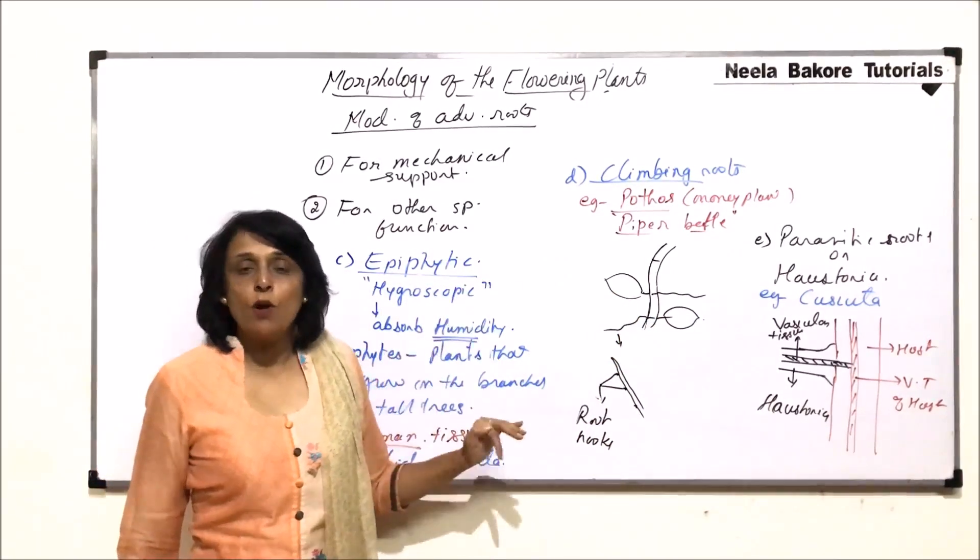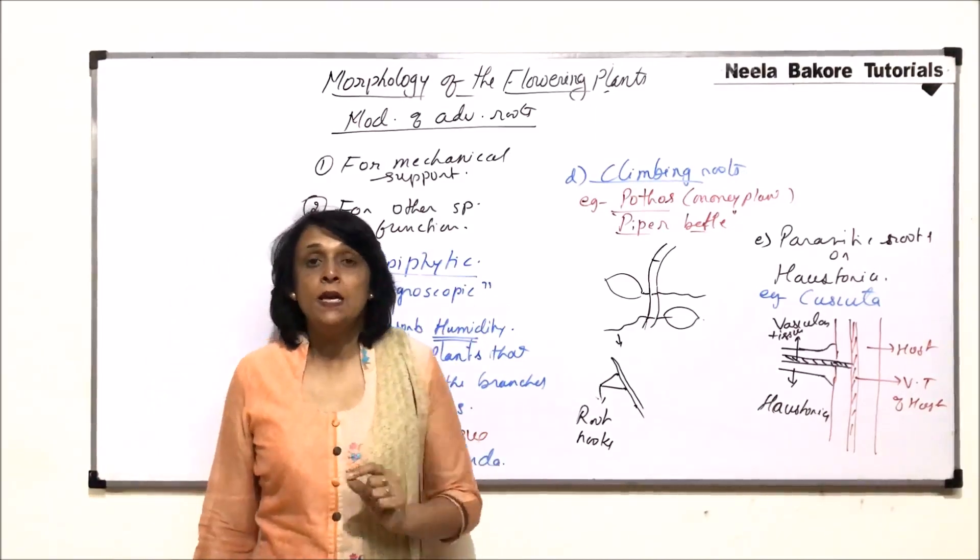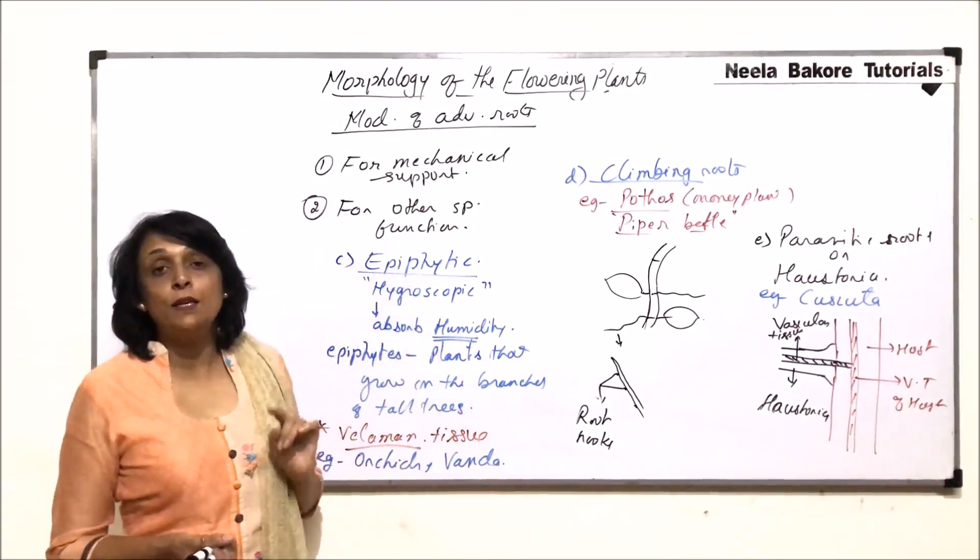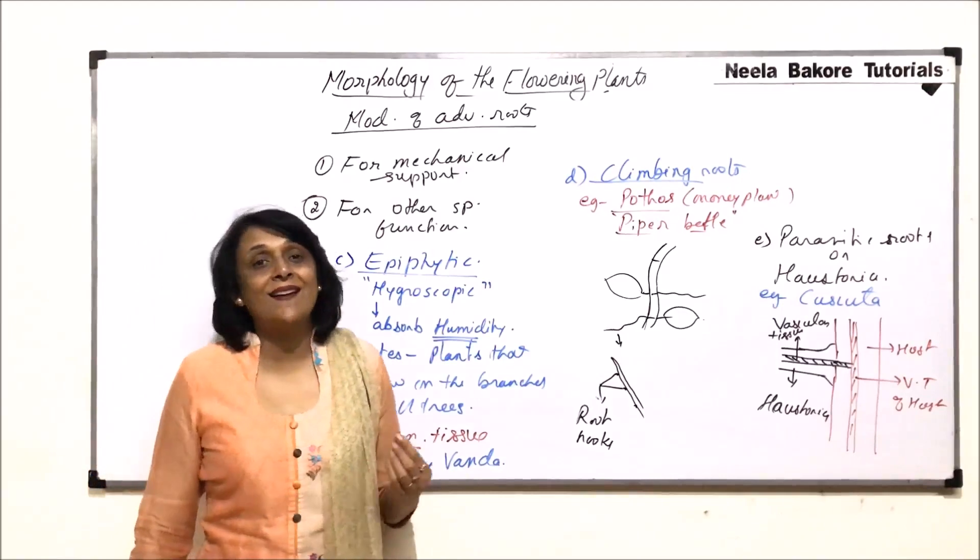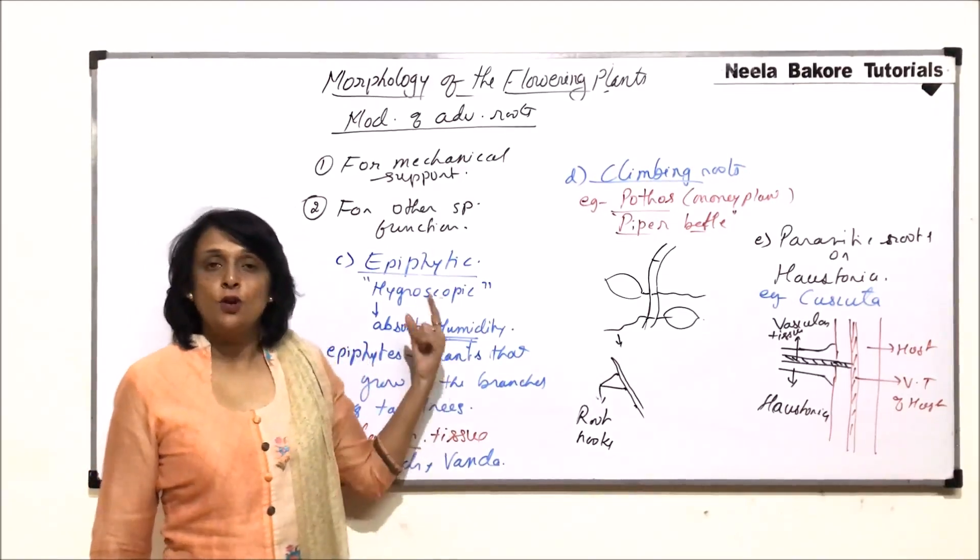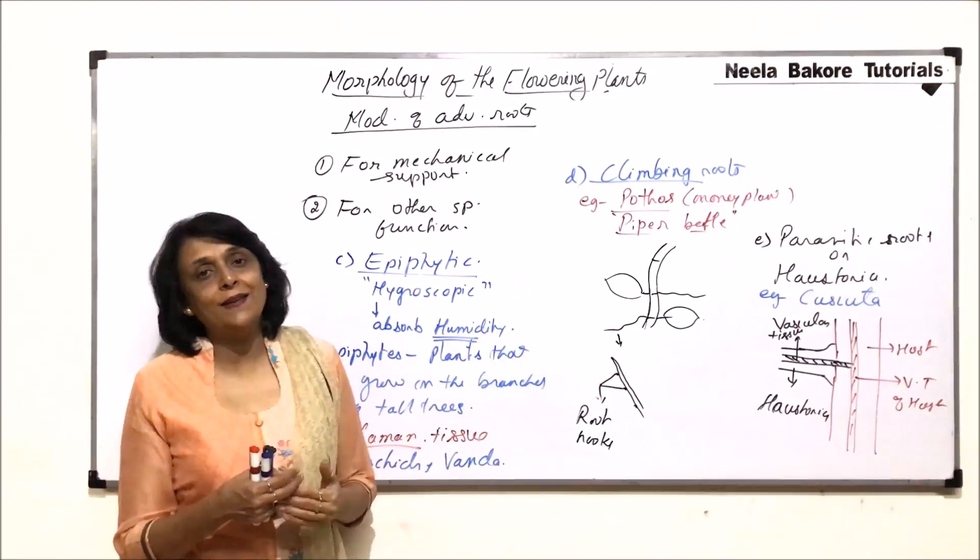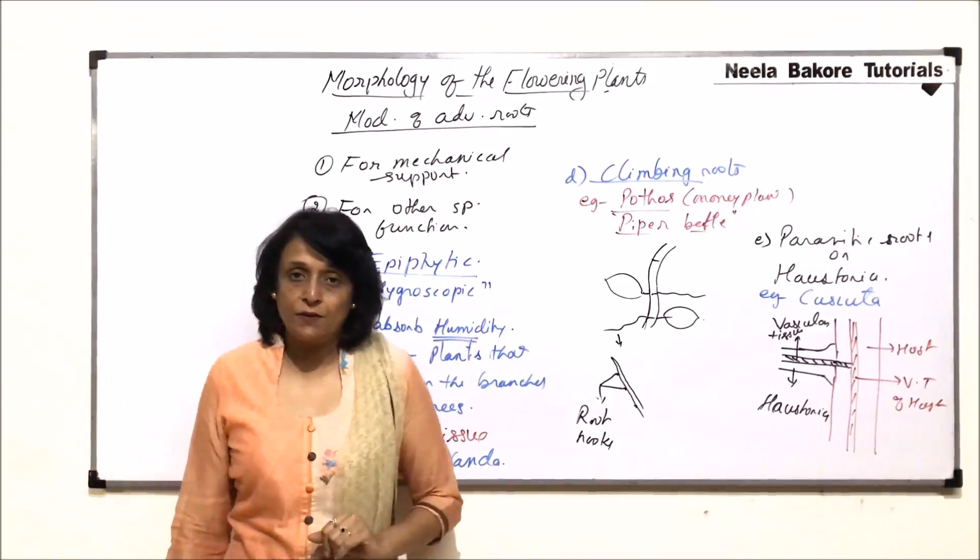We can add one more modification here, which we have already talked of. That is, heptera. So, heptera, because they help those assimilatory roots to stick to the surface, they can also be termed as clinging roots or hepterite cell. So, heptera is also one additional modification. We can add it as separate or we can include it along with the assimilatory roots.